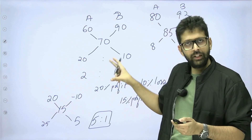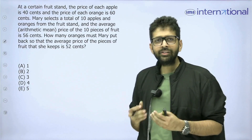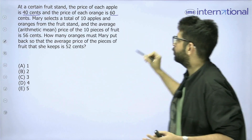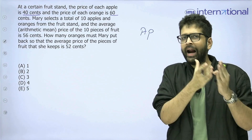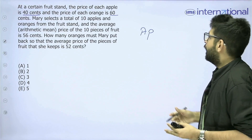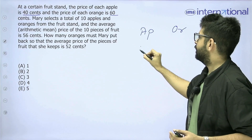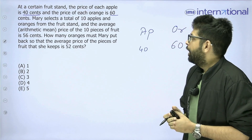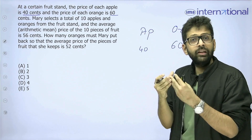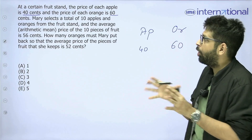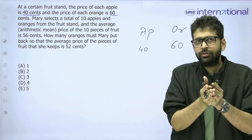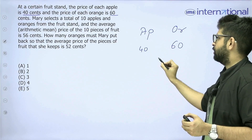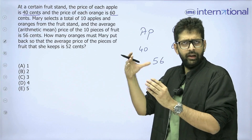Now we are going to use this same concept in the question that was asked to us. At a certain fruit stand, the price of each apple is 40 cents and the price of each orange is 60 cents — so we are dealing with 2 types of fruits, just like we dealt with 2 brands of rice. Mary selects a total of 10 apples and oranges from the fruit stand. We don't know how many oranges or apples she bought, but a total of 10 fruits were bought, and the average price of the 10 pieces of fruit is 56 cents.